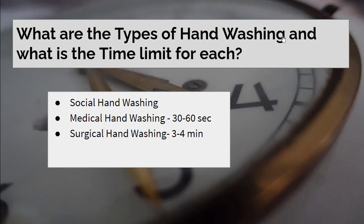What are the types of hand washing and what is the time limit for each? There are three types of hand washing: social hand washing, medical hand washing, and surgical hand washing. The time limit for medical hand washing is 30 to 60 seconds, and the time limit for surgical hand washing is 3 to 4 minutes.